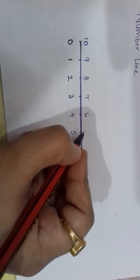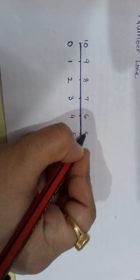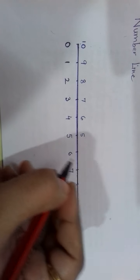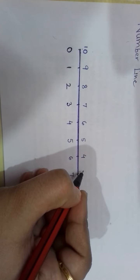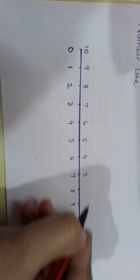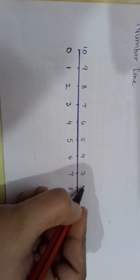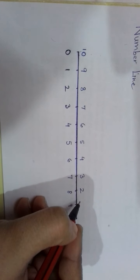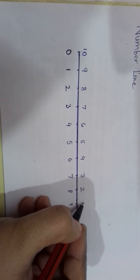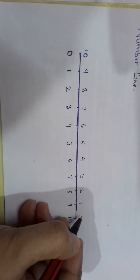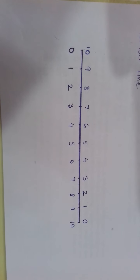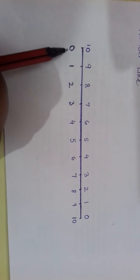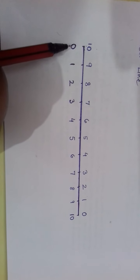Above 5, 5 will come only. And then here I'll write 4. Then 3 will come. Then 2. Then 1. And then here I'll write 0. So you can see at the bottom, numbers are written in forward.